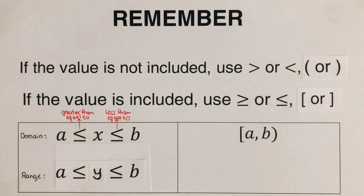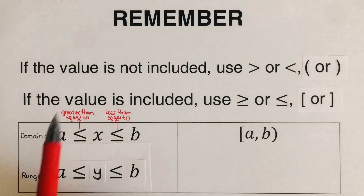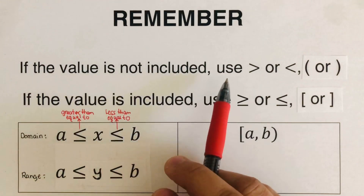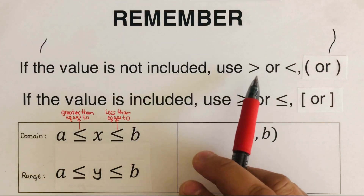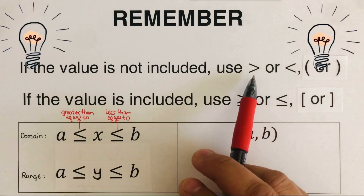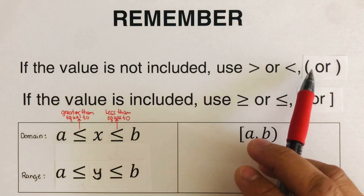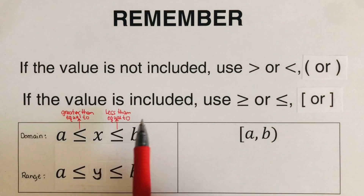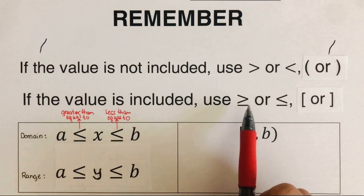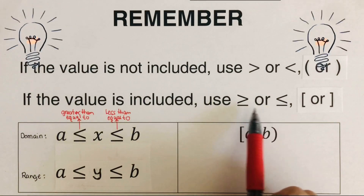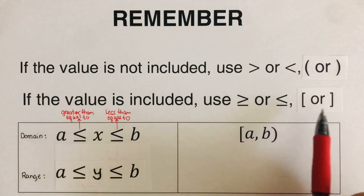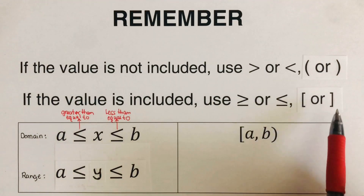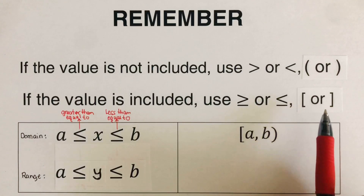We remember that in writing for the domain and range of a given graph, if the value is not included, we are going to use an inequality notation with no bar underneath, or we are going to use a parentheses if we want it in interval notation. If the values are included, then we use a greater than or less than with a bar underneath, and we use a bracket if we want it in interval notation.